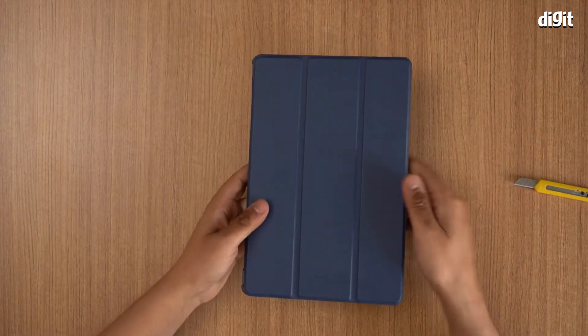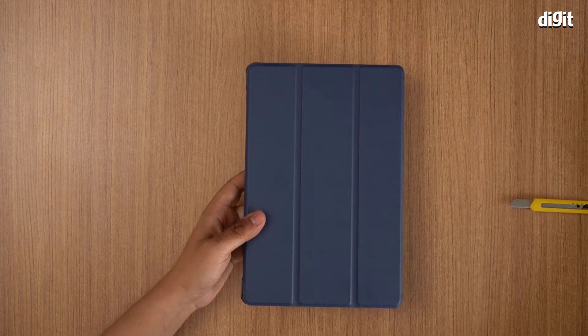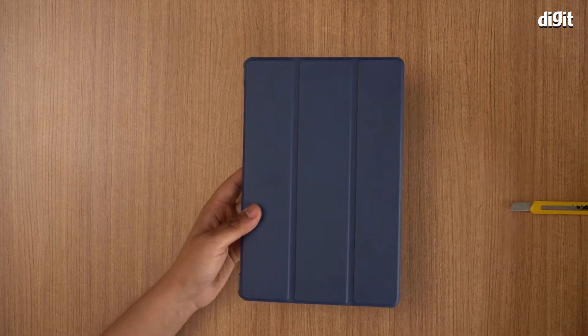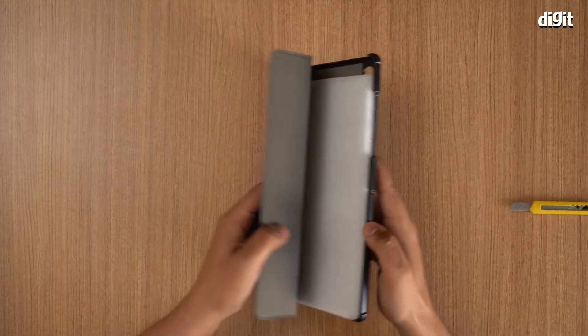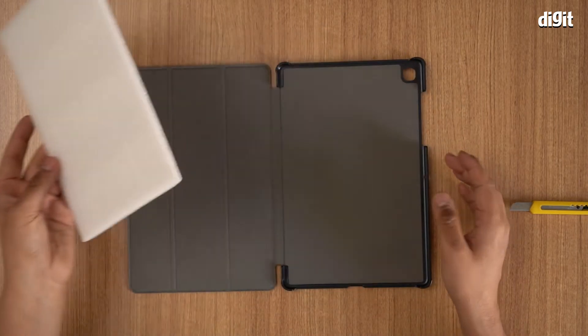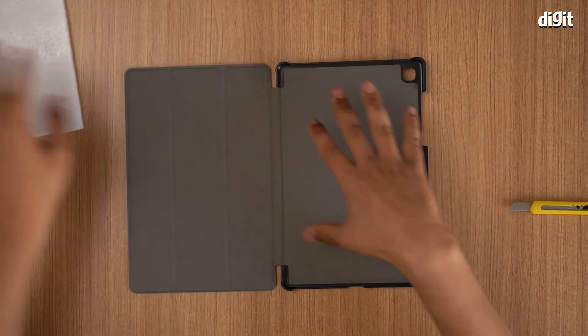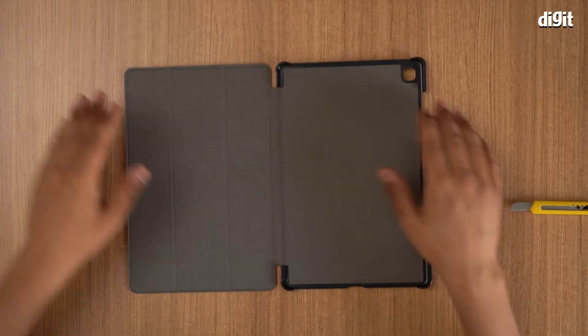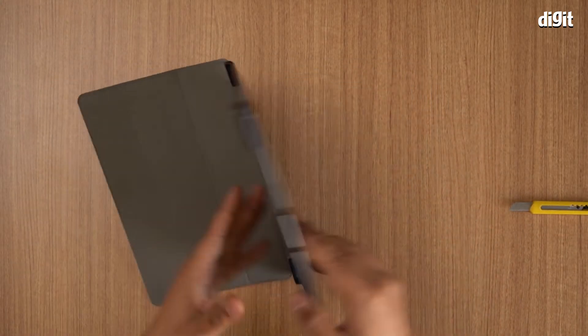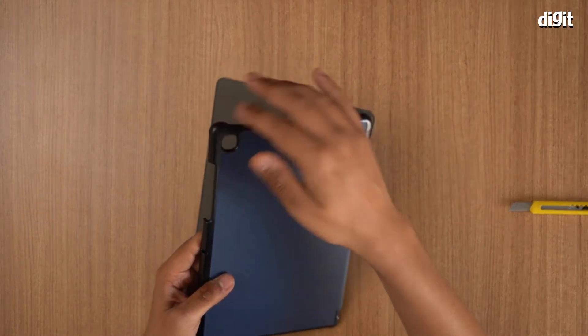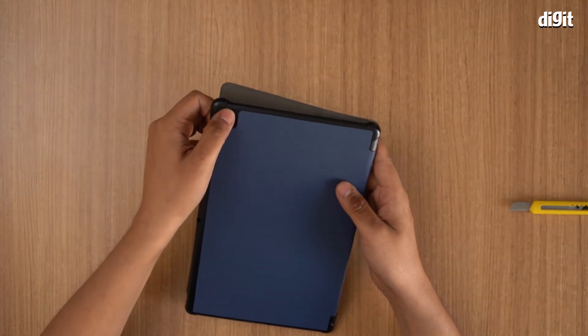So there you are, that's what the case actually looks like. That's where the tablet would fit. I don't have the tablet with me but I can show you the case. The back is actually hard, it's pretty sturdy. That's a little place for your camera where the camera would go out.